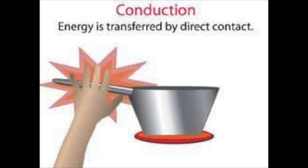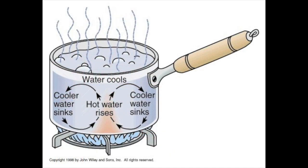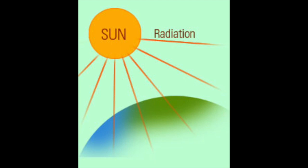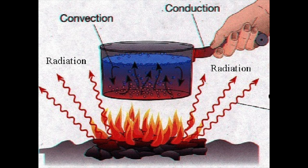Conduction is the heat transfer between objects that are touching. Convection is the heat transfer in a fluid or air when hot air rises and cold air sinks. Radiation is the heat transfer of electromagnetic waves. This picture shows how all thermal energies work: conduction is when the hand is touching the hot handle, convection is when the hot water is traveling to the top of the pot and the cold water is traveling down, and radiation is the warm waves the fire is giving off.